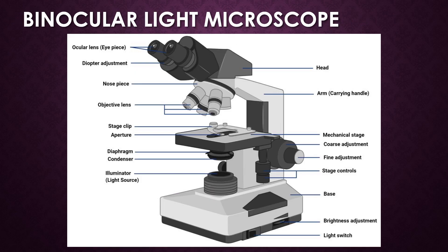This is the advanced format of the light microscope — that is, a binocular microscope. This microscope contains two eyepiece lenses, so it is called a binocular microscope. It has many parts.